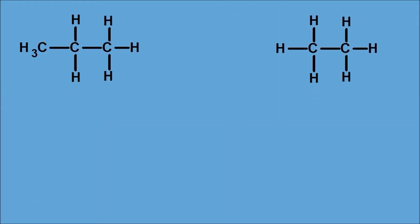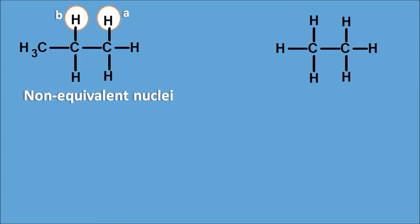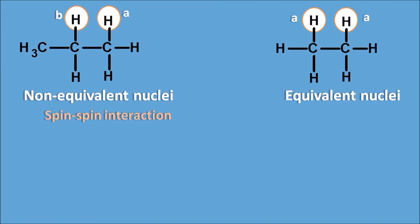Let us take two examples. If you consider two structures, in the first one the protons are not equivalent — one is an A proton and the other is a B proton in different environments, so these are non-equivalent nuclei. In the second structure, the hydrogens are the same because they are in the same chemical as well as magnetic environment, so these are called equivalent nuclei. Spin-spin interaction is observed in non-equivalent nuclei, while it is not observed in equivalent nuclei.